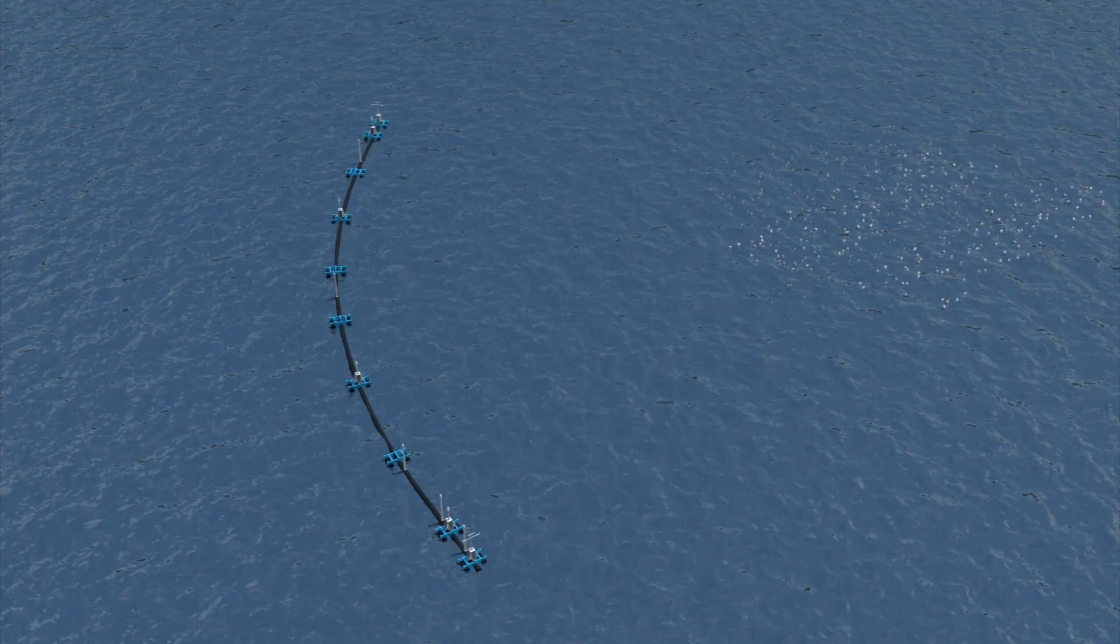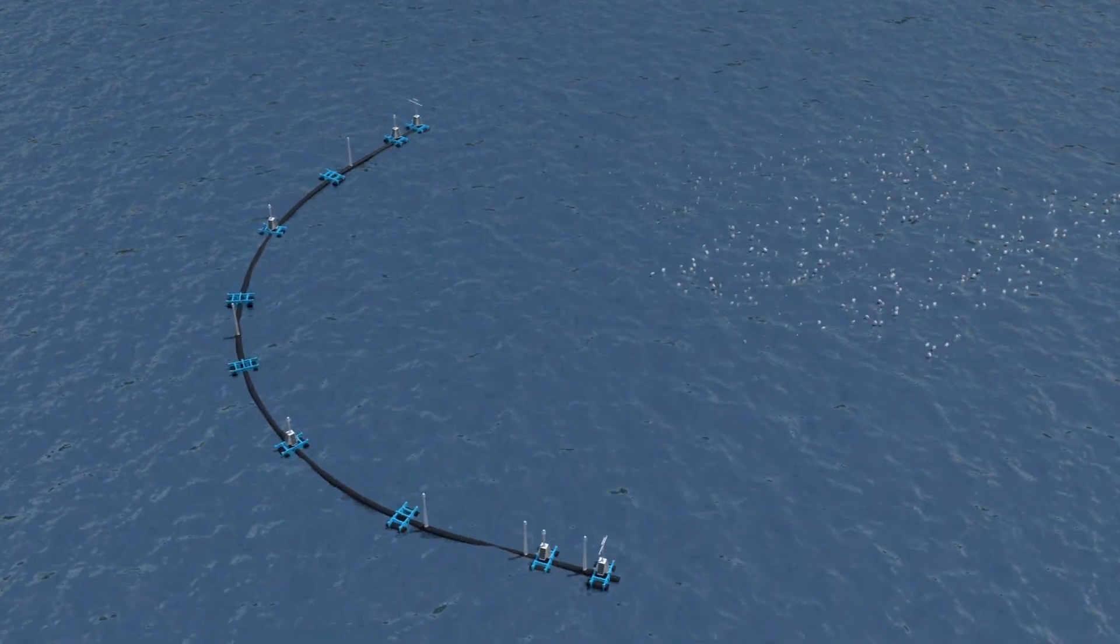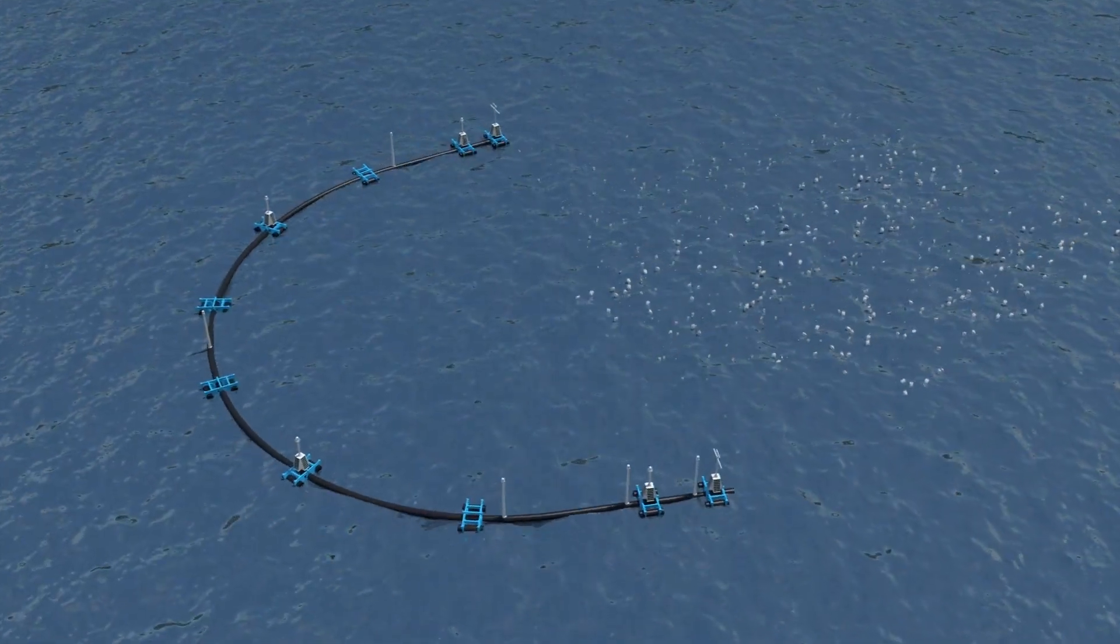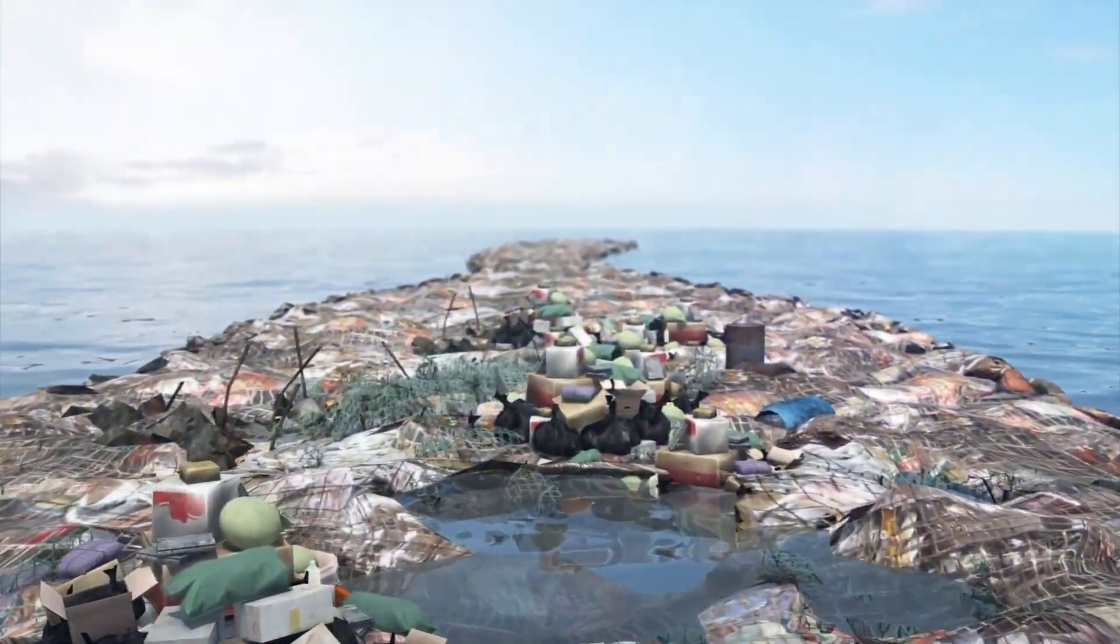The Guardian reports that the Ocean Cleanup Project System 001 is a floating 600 meter long U-shaped barrier that's meant to collect plastic debris in the ocean. The project's main goal is to clean up the Great Pacific Garbage Patch, a massive island of garbage in the Pacific Ocean between California and Hawaii.